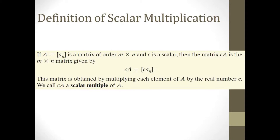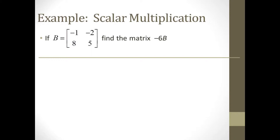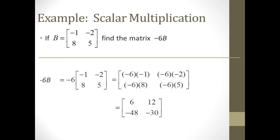Notice in our general definition, c can be any real number. Multiplying by a scalar does not change the order. For instance, given matrix B, to find negative 6 times B, we multiply negative 6 times every element of B. So negative 6 times negative 1 gives us positive 6 for row 1, column 1. Similarly, negative 6 times negative 2 equals 12 for row 1, column 2, and so forth.